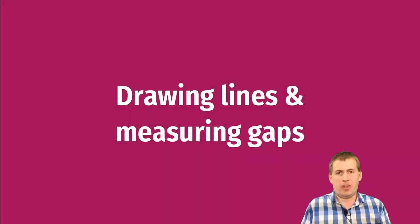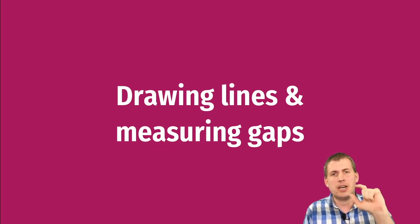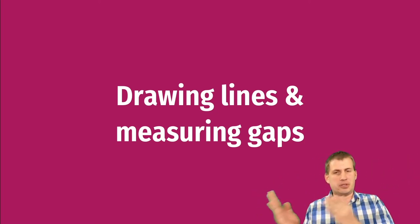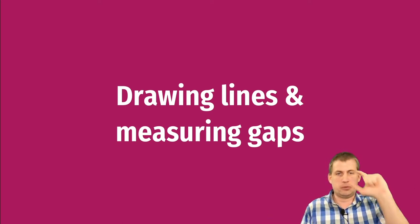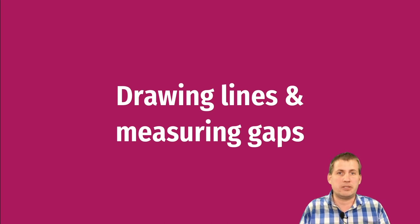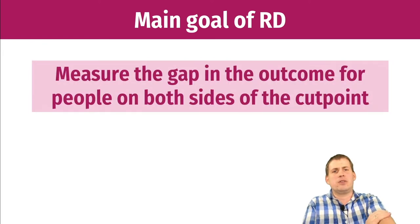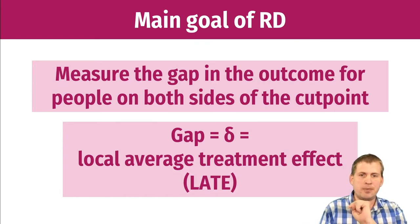Now that we've gone over the theory of how regression discontinuity designs work, we're going to talk about how to actually measure the size of that gap — because that's what we care about most. That's how we make causal estimates. As long as we can validly say that people on both sides of the cutoff are basically equivalent, we can measure the size of that gap, and that's our causal effect. But measuring that gap is tricky because there are a whole bunch of different ways to draw lines and measure how big it is. The main goal is to measure that gap — that's our Delta we've been talking about throughout the semester.